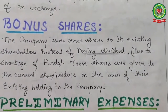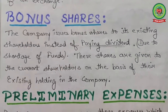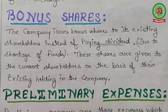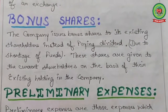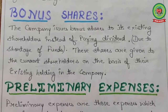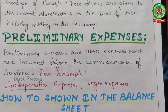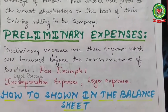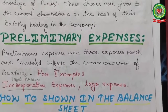The next term is bonus shares. The company issues bonus shares to existing shareholders instead of paying dividends. So when a company cannot provide dividends to shareholders due to shortage of funds, it provides bonus shares. These shares are given to current shareholders on the basis of their existing holding in the company — first check the existing shareholding, then provide bonus shares in that proportion. Preliminary expenses are those expenses incurred before the commencement of business, like incorporation expenses, legal expenses, logo expenses — expenditure incurred by the company at the very beginning.